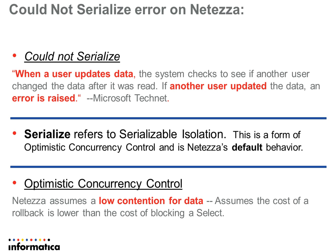For the ETL user, if you try and update the same table with two different transactions, Netezza assumes that the cost of rolling back one of those transactions is actually lower than blocking the select statement. So that's why we're getting this 'could not serialize' error.